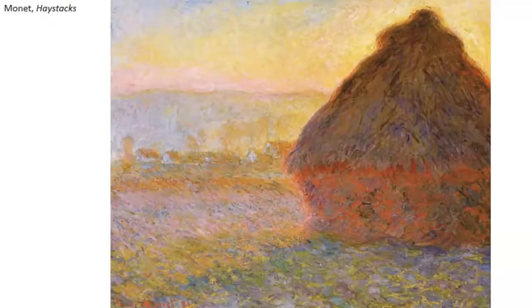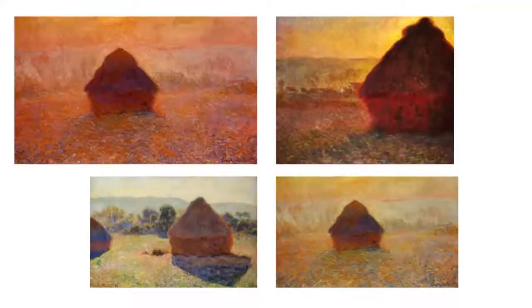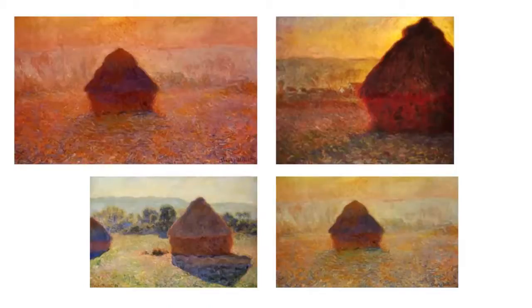This next series — the haystacks — you've probably seen, as some of these paintings are in Milwaukee. His haystack paintings are wonderful examples of how not to use black and just make your shadows with a variety of different colors like purples and blues. Look to these paintings as good examples of what to do when making darker colors.